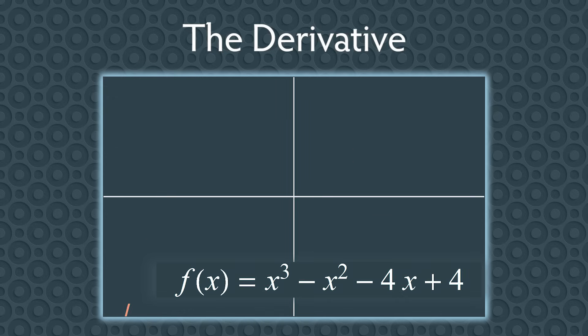As an example, let's use the function f of x equals x cubed minus x squared minus 4x plus 4. Suppose we want to find the steepness of the graph at the point negative 1, 6. How would we do it? And what do we even mean by steepness?